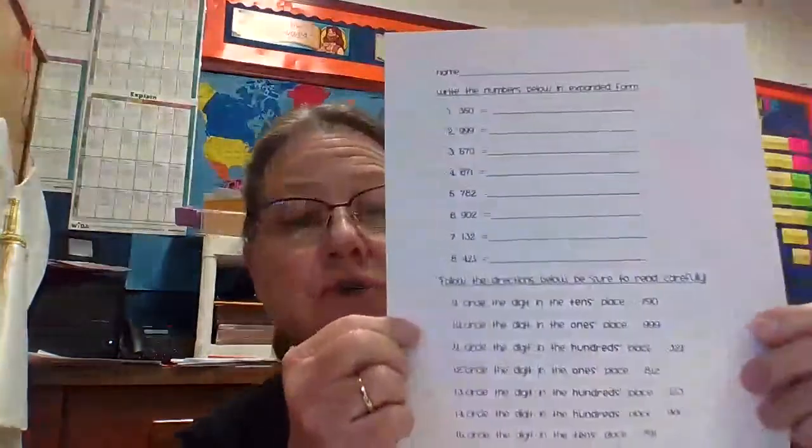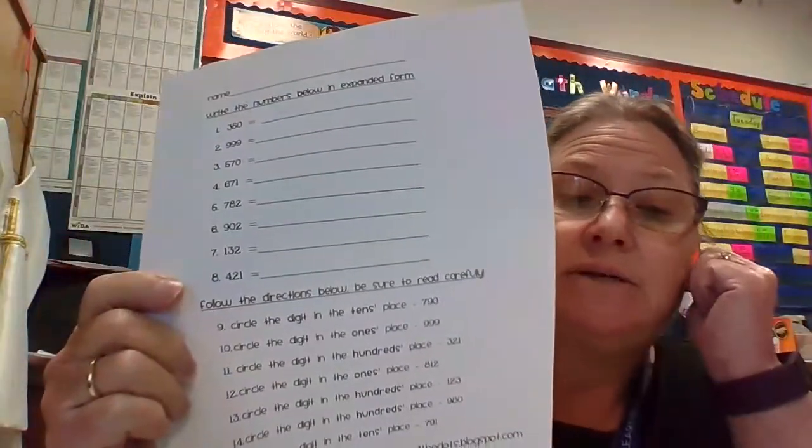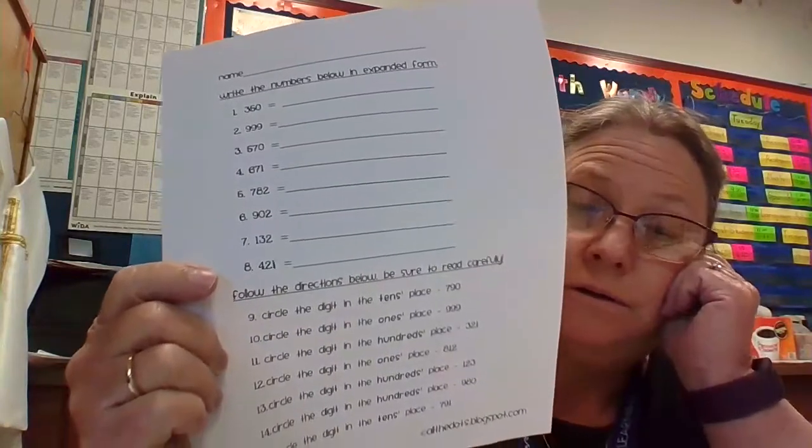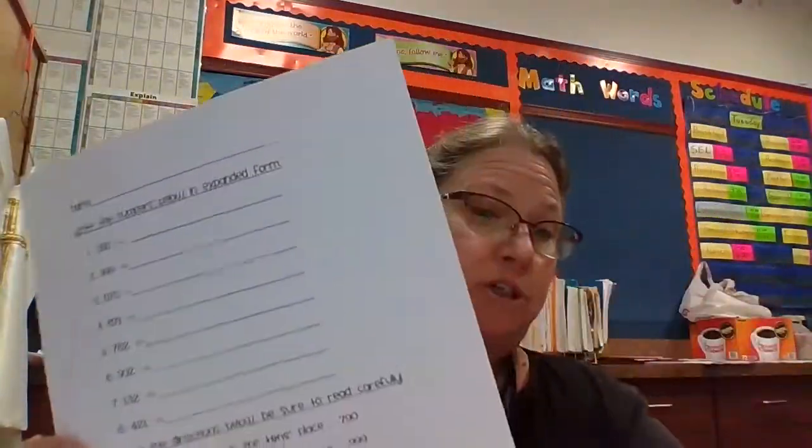Down at the bottom, it says circle the digit. That's the number. Circle the digit in the tens place. Well, you've got 790. If you need to, label. Label hundreds, tens, and ones, and then circle the number that it says in the tens place. Some of them ask you in the hundreds place. Some ask you to circle in the ones place. So we're working with expanded form. There's a little extra to do today in math.